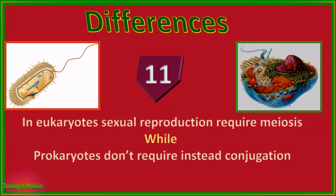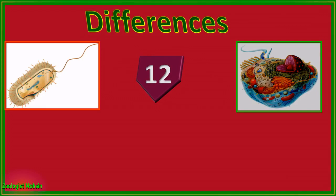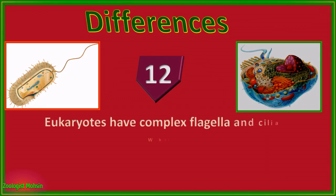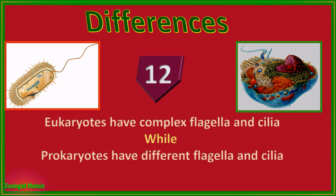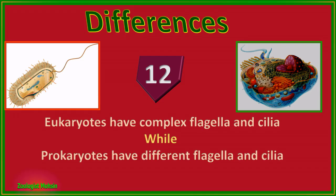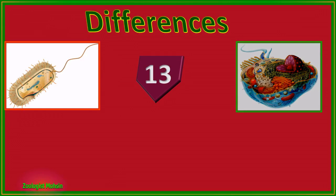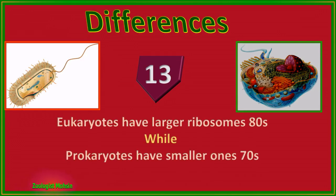Number eleven: in eukaryotes, sexual reproduction requires meiosis for the formation of gametes, while prokaryotes don't require meiosis and instead use conjugation for sexual reproduction. Number twelve: eukaryotes have complex, advanced flagella and cilia, while prokaryotes have different flagella and cilia which are quite different in structure and anatomy.